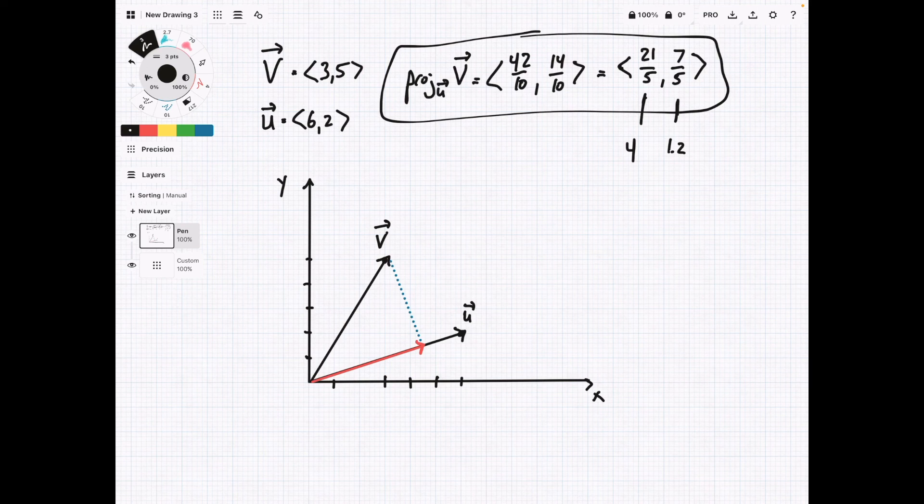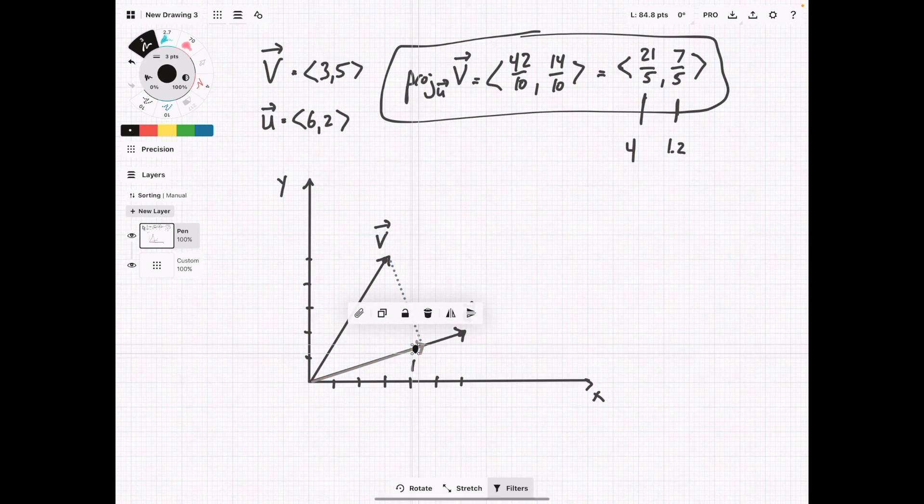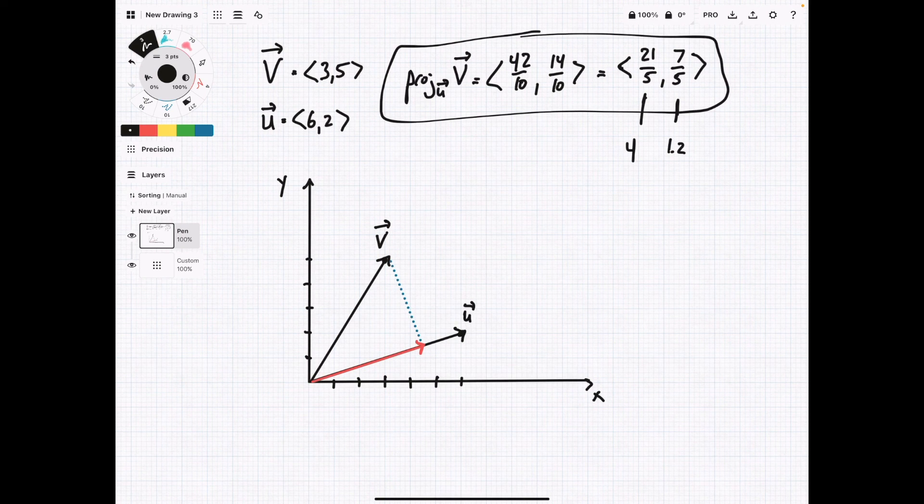So if we look here, we have 1, 2, 3, 4, and a little more, which this was an approximation, so that's fine. And then we have a little above 1. So if we come up here, yeah, that's just about where this vector would fall. Obviously, this is not to scale, but just by visualizing, we can make sure that the answer we got, this projected vector, is in the ballpark of where the actual vector should be.